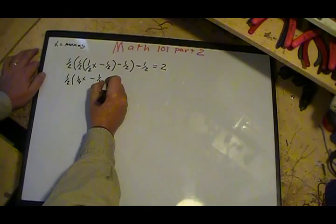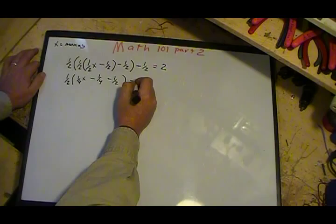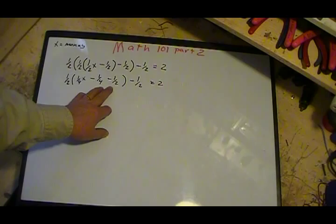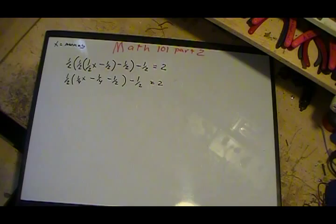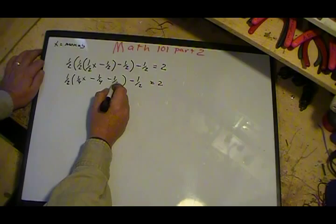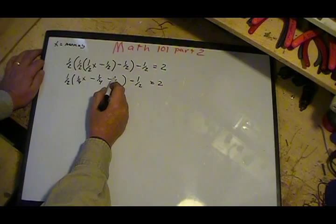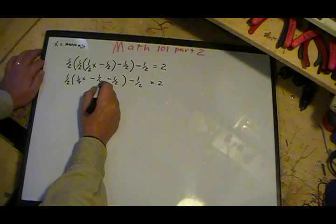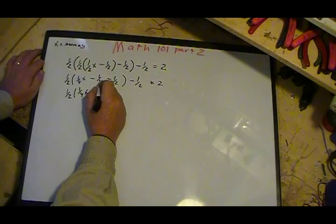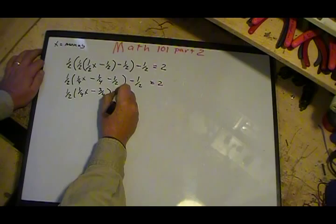Now I gotta do what's inside this parentheses. Well when you add fractions, I'm not really gonna go deep into basic math or anything, but I gotta change, I gotta look for the lowest common denominator. So I'll change this to fourths. In order to do that, I have to multiply the top by two and the bottom by two, and then I'll go ahead and combine these two. So then I'll have 1/2 times 1/4x minus, minus 2/4 minus 1/4 gives me minus 3/4, minus 1/2 equals two.